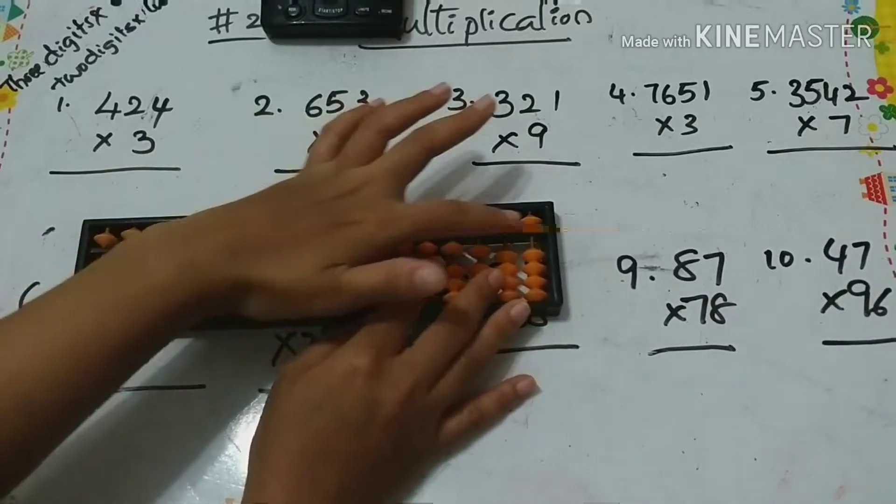Next, 87 times 78. Eight sevens are 56. Eight eights are 64, how to add 6? Papa up, mama up, babies up. Then four. Then seven sevens are 49: plus ten, plus five, minus one. Five, six, five, six, five, six. So what's the answer? 6786.